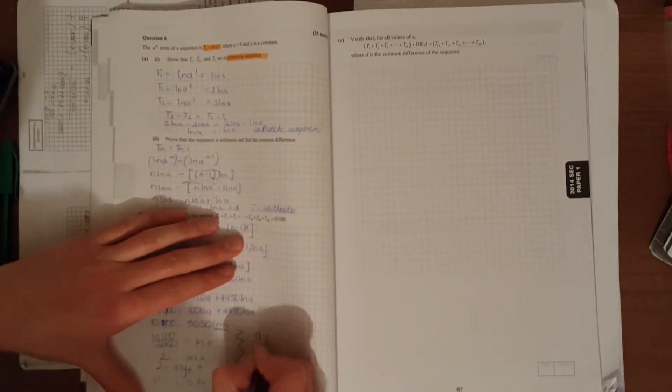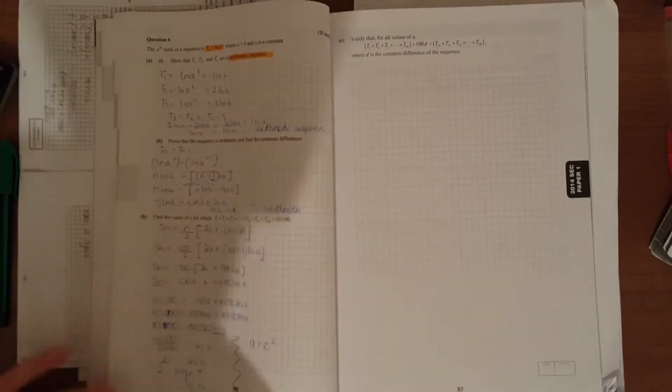Our number equals the base squared, e to the power of 2, which is e². That's it.